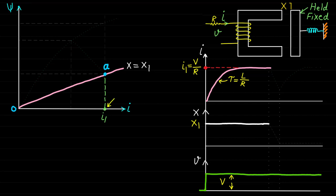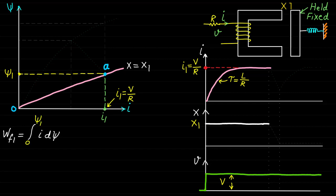The stored energy or field energy at point A, where the magnetic field linkage is equal to psi1, can be represented by WF1. This stored energy can be calculated by integrating the element i·dpsi from 0 to psi1, and this will be equal to the area OABO.